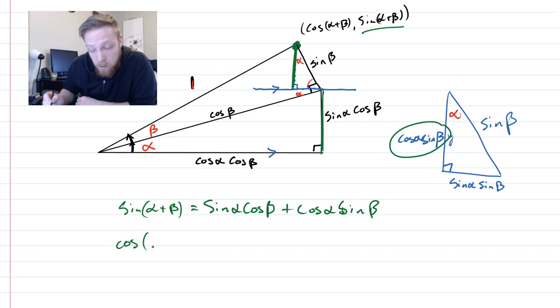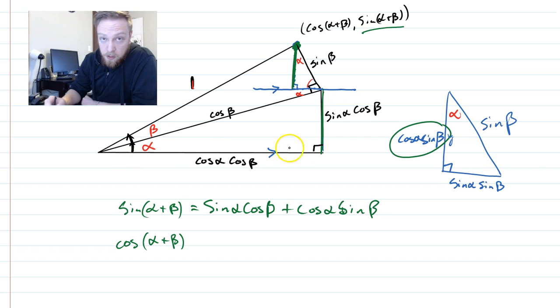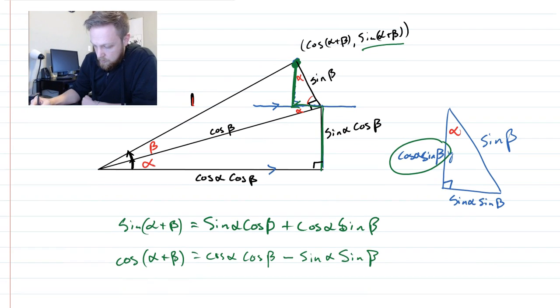And then if you want to do the same thing for cosine, just remember that cosine is distances left or right. Cosine of alpha plus beta is going to be the entire width here, well, the width up to this point right there. And so you'll notice something, you're going to be going along here, cosine alpha cosine beta. But to get to the point, you actually have to backtrack a little bit. And that little bit is right here, the base of this small triangle, which is sine alpha sine beta. So you got to subtract sine alpha sine beta.